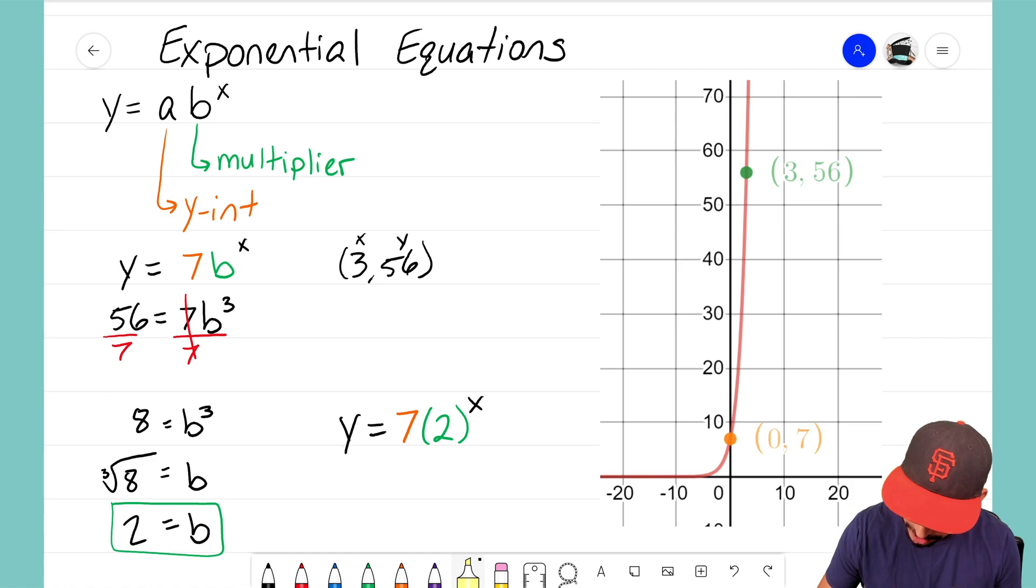That right there is how you create an equation of a graph, an exponential graph, when you're given two points. If you're given the zero term then you just plug that in as your a value, but you got to work a little bit to get your multiplier. And that right there on the left side those are the steps to do that - take that extra point that you have, plug it in for your x and y, and then solve for your multiplier. It's that math magician and I'll see you on the next video.